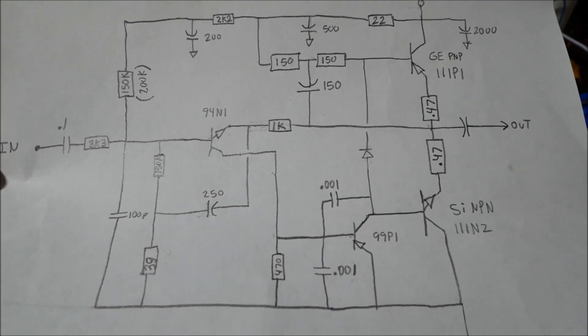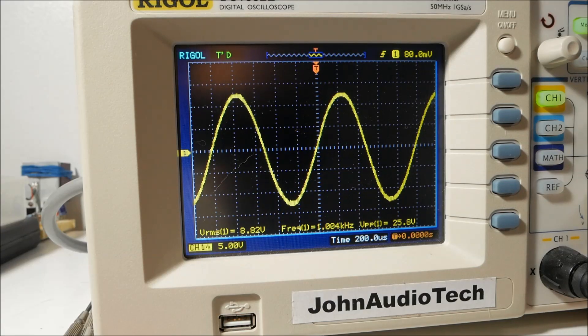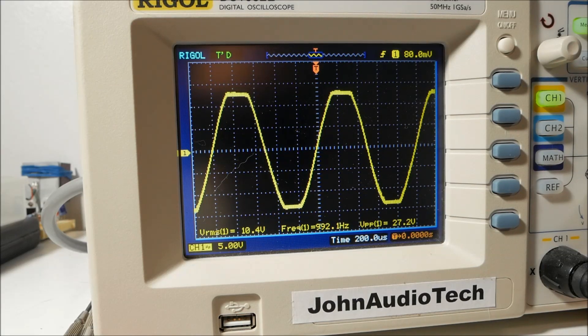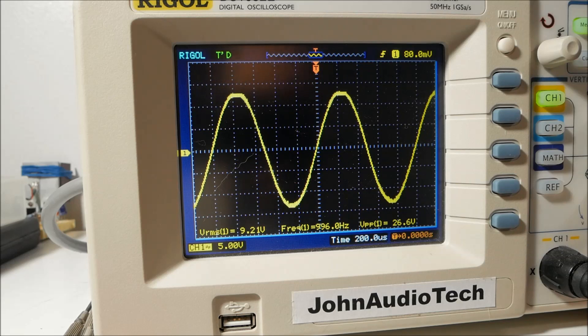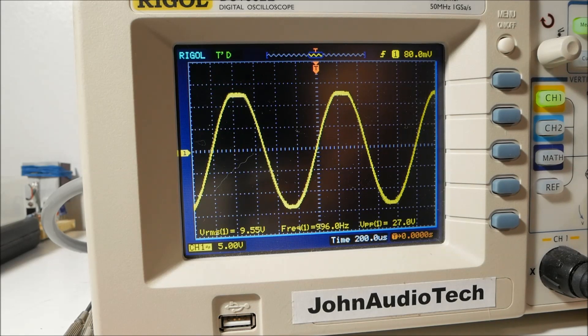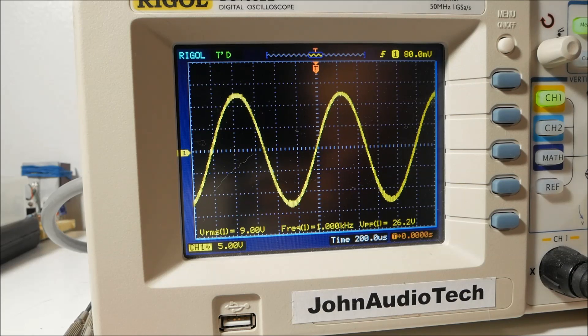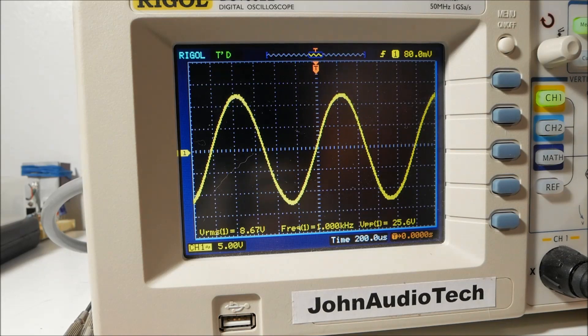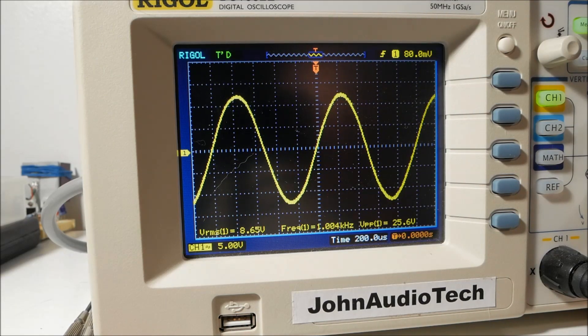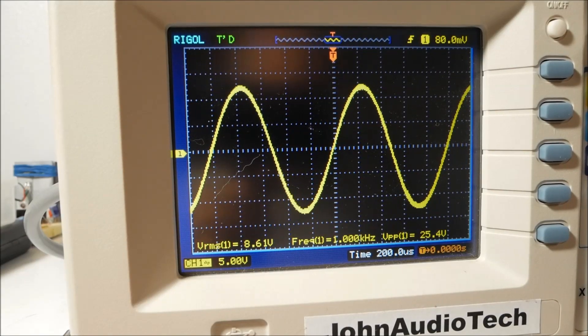Let's get a power measurement here. It's clipping very symmetrically. I could fine tune that bias even more if I wanted, but I'm not going to monkey with it. We're getting about 8.66 volts. So we take 8.66 volts RMS, square it, divided by 8, so we're getting about 9.4 watts.